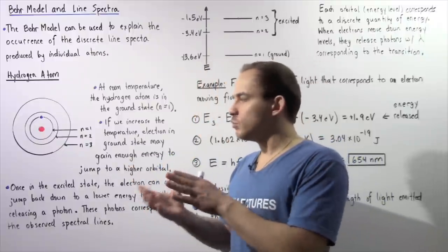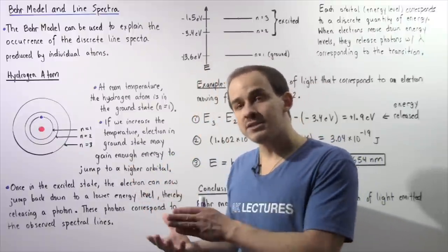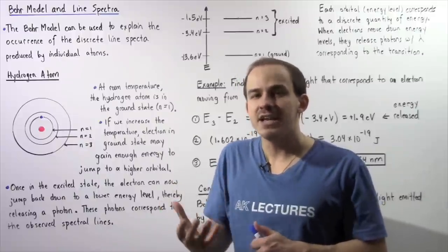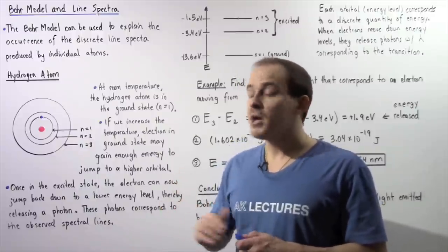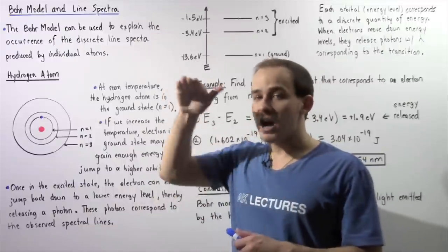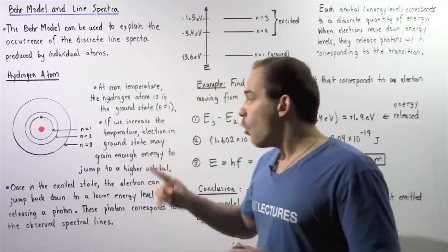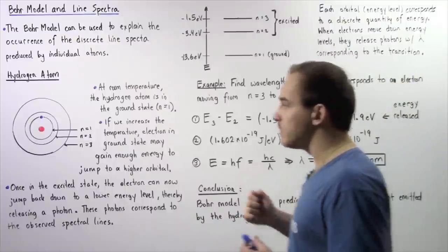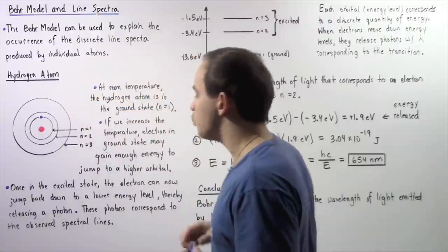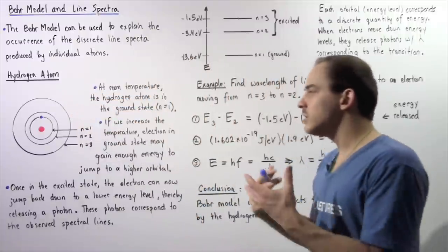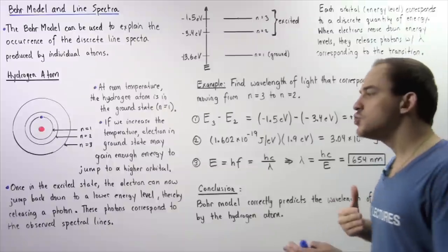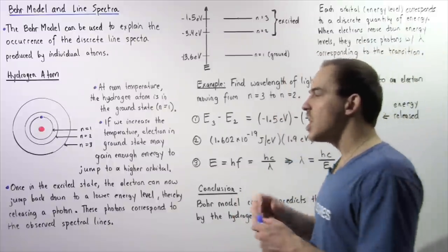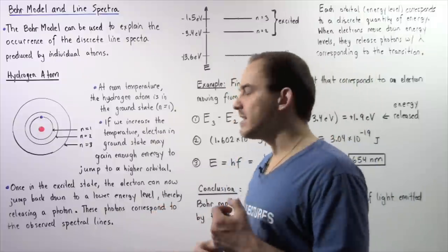Let's suppose our atom is at room temperature and we begin increasing the temperature of that room. Eventually, the electron can gain enough energy to jump to a higher energy level, to a higher orbital. Once our electron is found in the excited state — for example, in the orbital given by n equals 2 or n equals 3 — the electron can now jump back down to a lower energy level. And when that takes place, that releases a single photon.